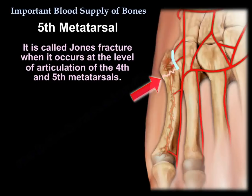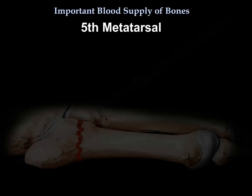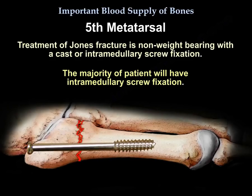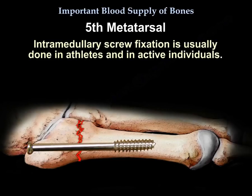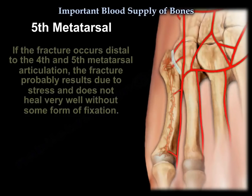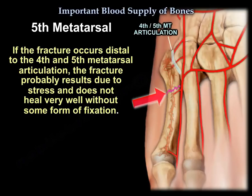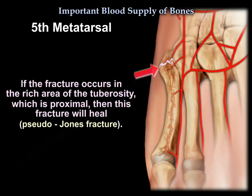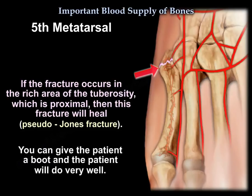The Jones fracture occurs at the level of articulation of the fourth and fifth metatarsals. Treatment is non-weight bearing with a cast or intramedullary screw; the intramedullary screw is usually done in athletes and active individuals. If the fracture occurs distal to that articulation, it is likely a stress fracture and usually does not heal well without fixation. If the fracture occurs in the rich vascular area of the tuberosity proximally, it is called a pseudo-Jones fracture and will heal well with a boot.